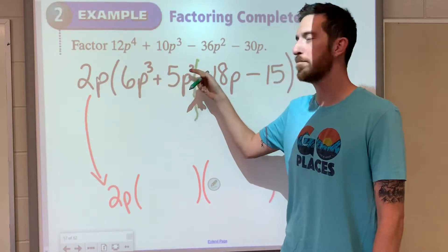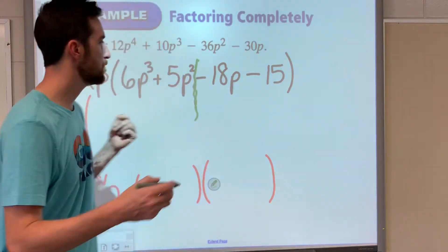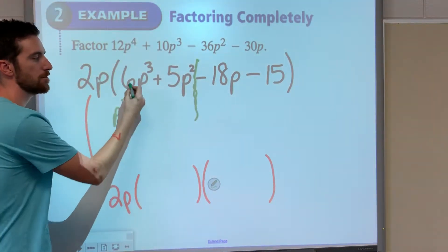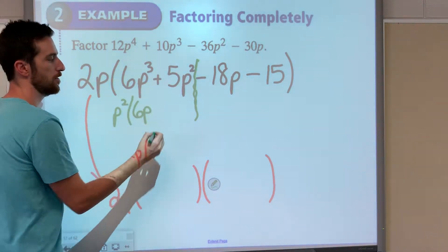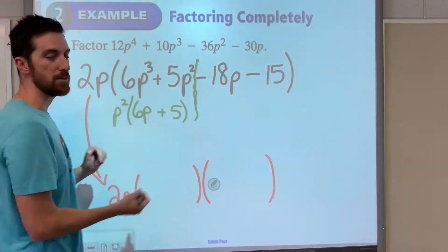6p to the 3rd plus 5p to the 2nd. 6 and 5, just 1 goes into those. But they both have p squared. So p squared times 6p would give us 6p to the 3rd, and p squared times 5 would give us 5p squared.